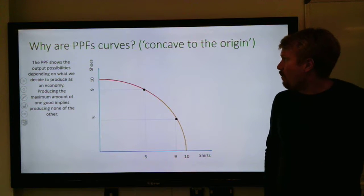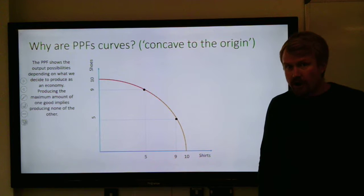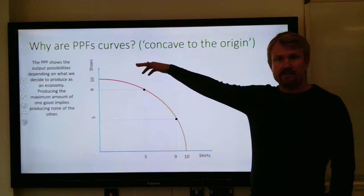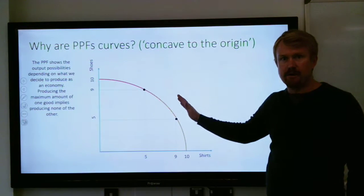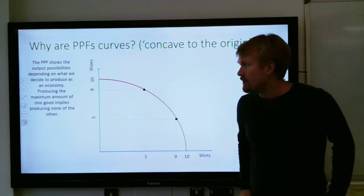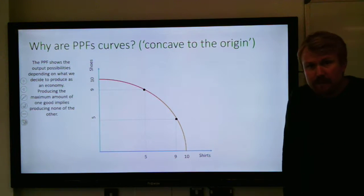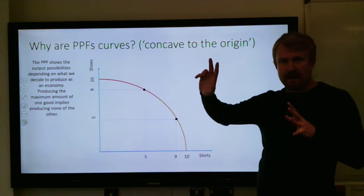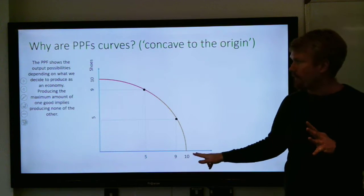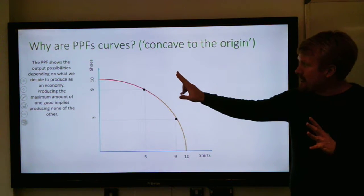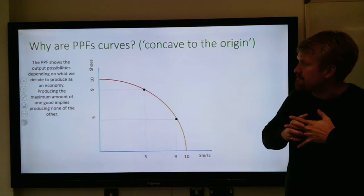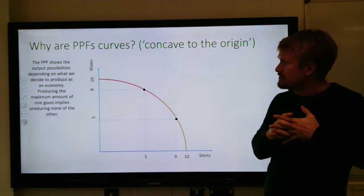We're going to look at this idea of why a PPF is a curve, which you can sometimes describe as concave to the origin because it looks like a bow shape, which is concave if you look at it from the origin. The way we would explain this is by looking at an economy that produces shoes and shirts. If we have this production possibility frontier showing the possibilities depending on what we decide to produce as an economy,